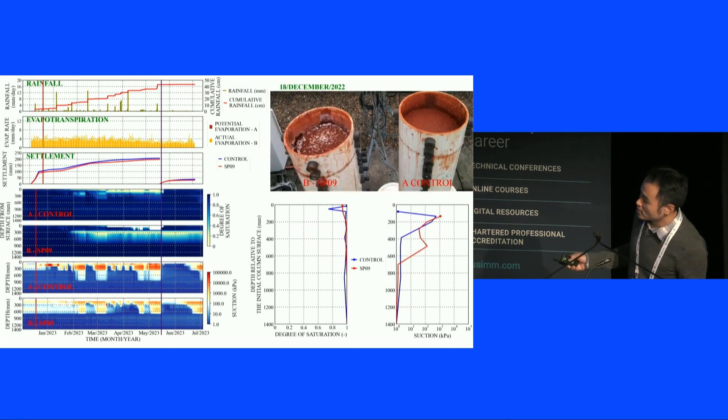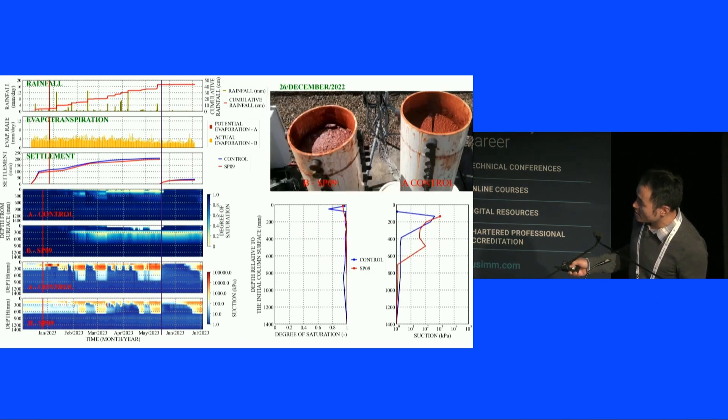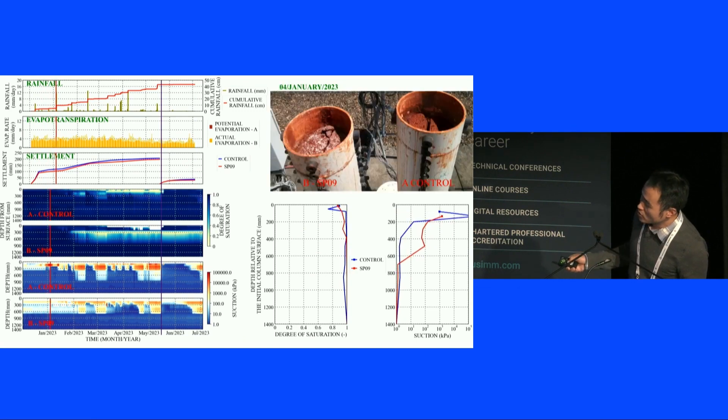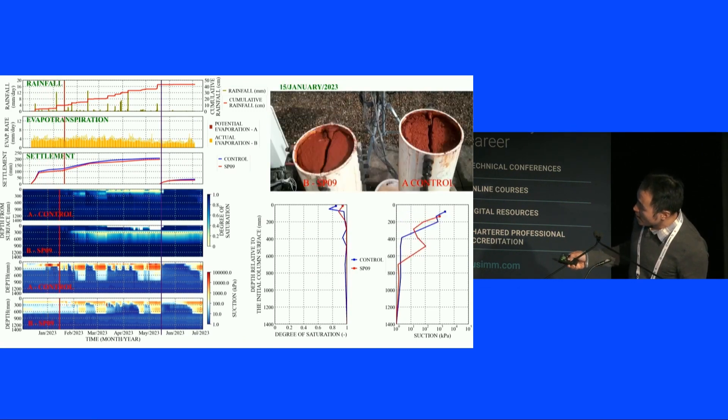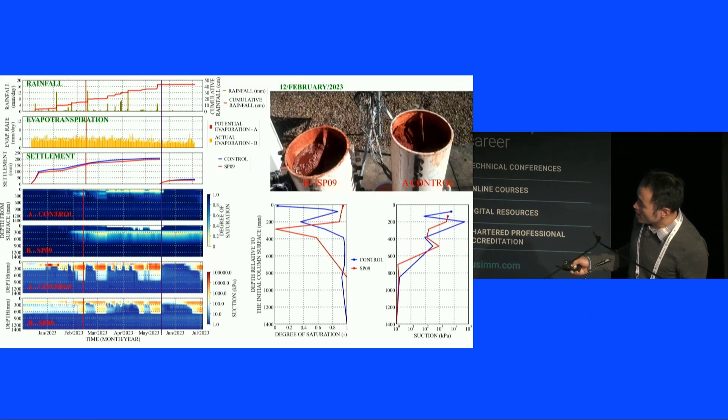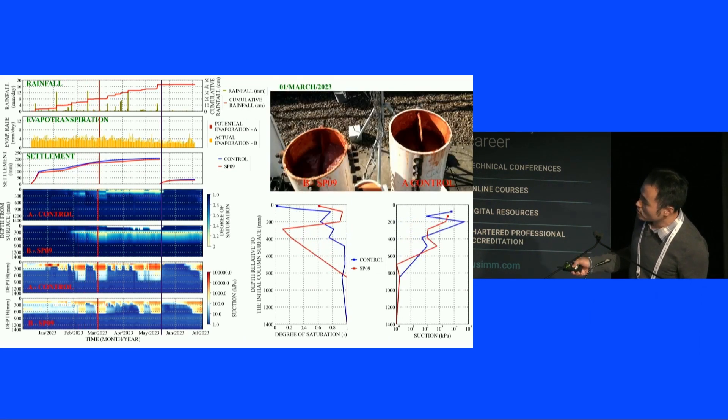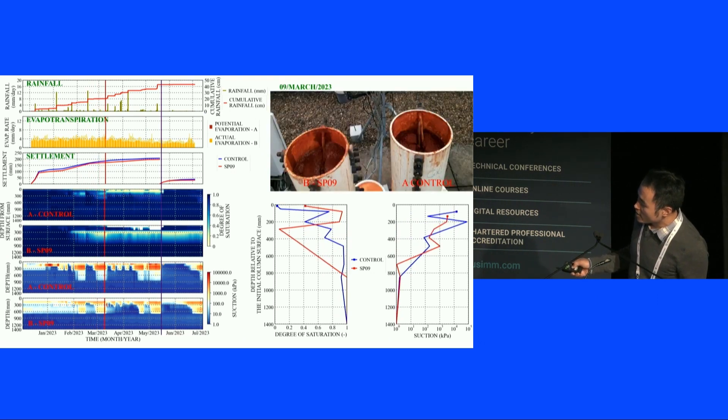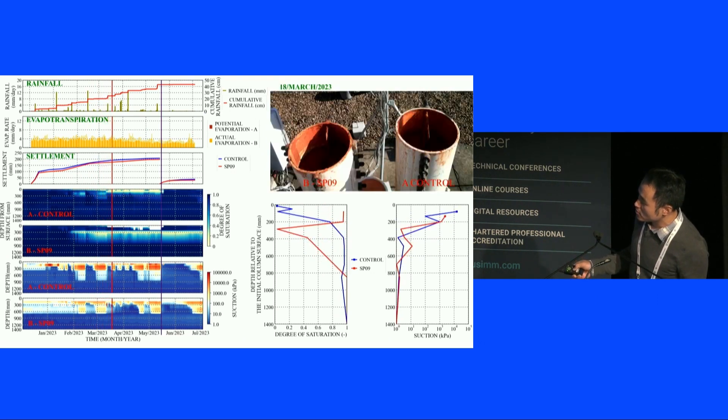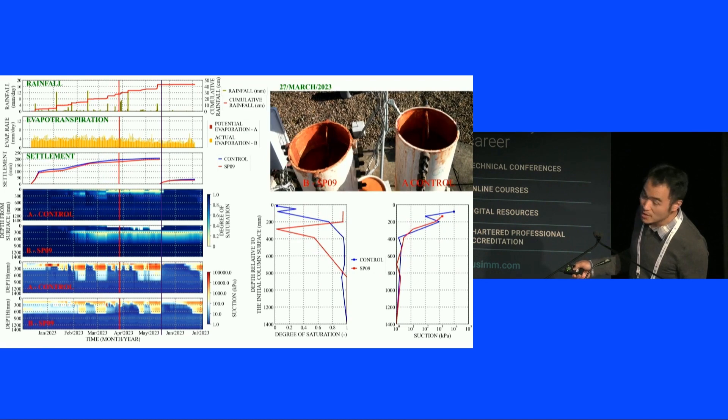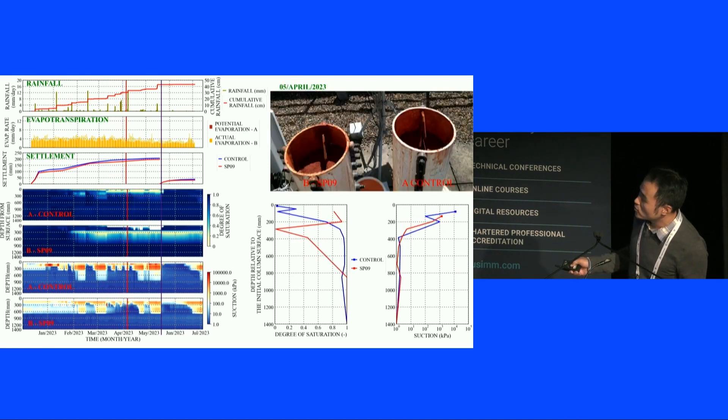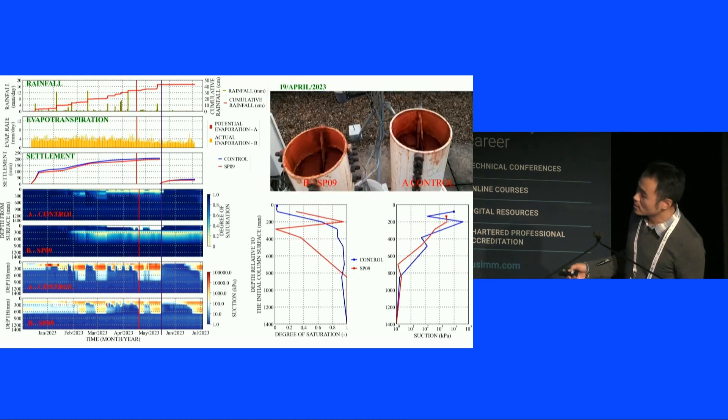We started to use the moisture sensor to tell. These two graphs are basically degree of saturation over depth. Zero means is light, and blue is green. You see at the very beginning, there's no moisture loss. And later on, because of the sun, it started drying. But what sample actually dried more? The SP09 has the unsaturated zone depth roughly 900 millimeters. This is only 300. Why is there a difference?